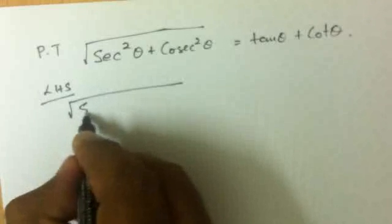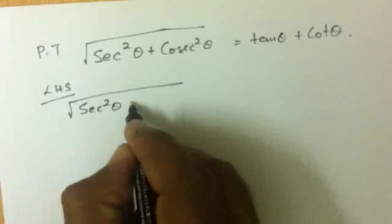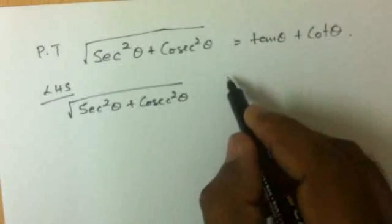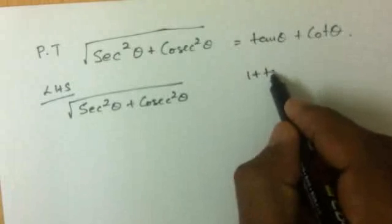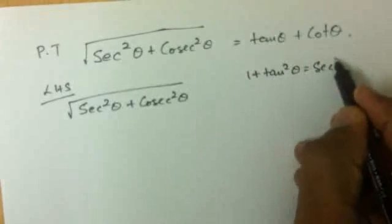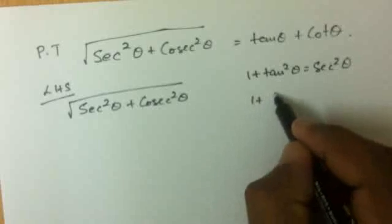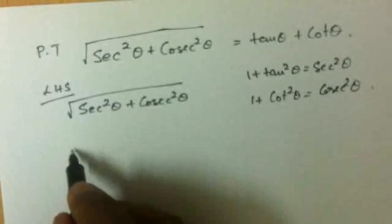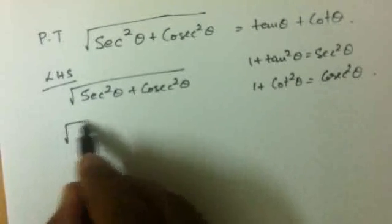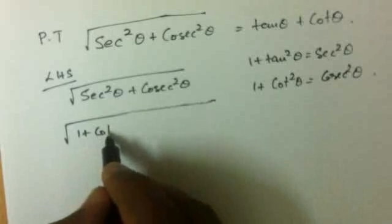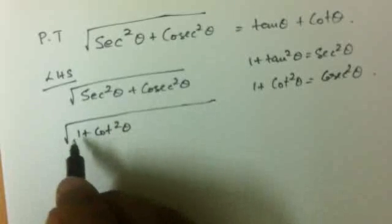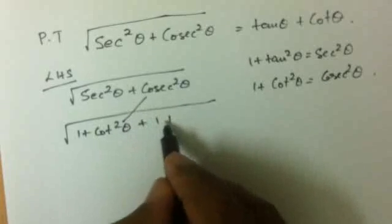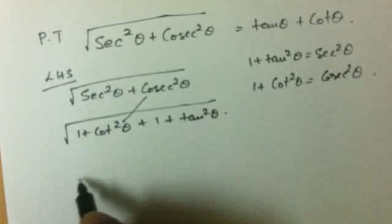It is square root of secant squared theta plus cosecant squared theta. From the identities that we have learnt, we know 1 plus tan squared theta is equal to secant squared theta, and 1 plus cot squared theta is equal to cosecant squared theta. So, using those identities, we can write this as square root of 1 plus tan squared theta plus 1 plus cot squared theta.